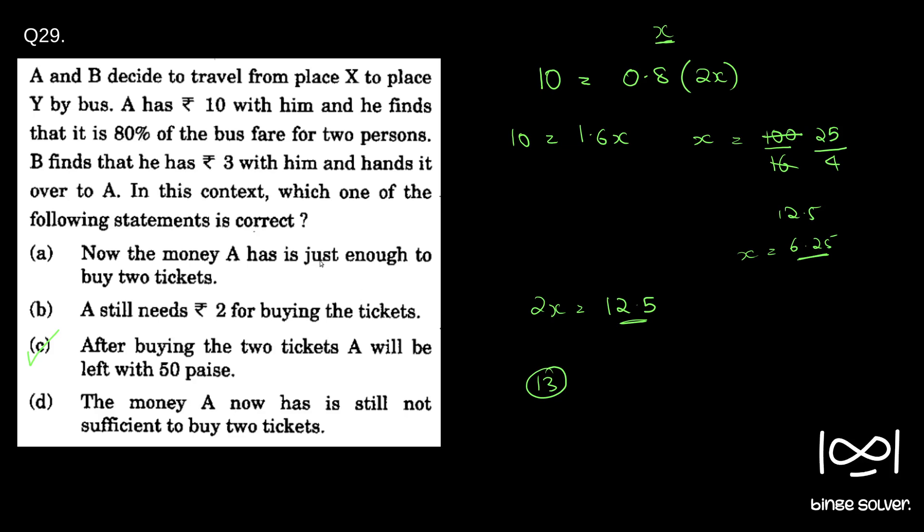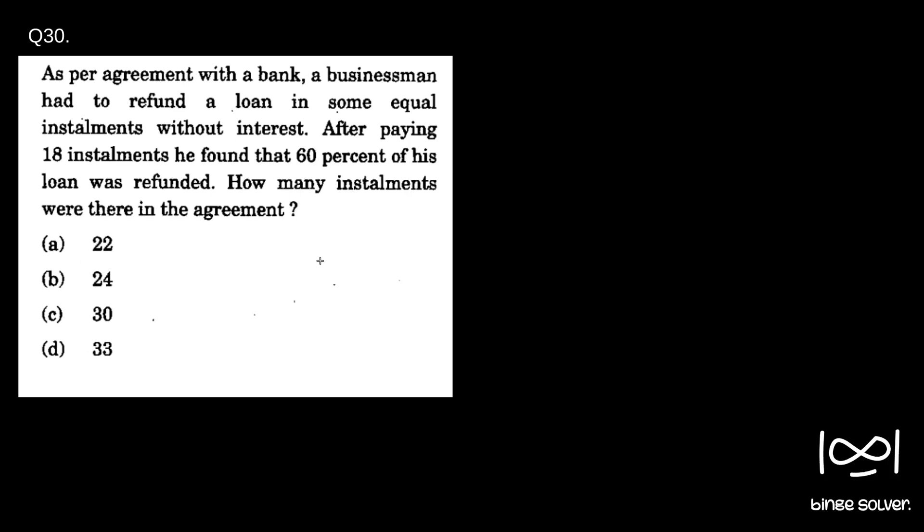Moving on to the next question, question 30. As per the agreement with the bank, a businessman had to refund a loan in some equal installments without interest. After paying 18 installments, he found that 60 percent of his loan was refunded. How many installments were there in the agreement? So this is a fairly simple question.